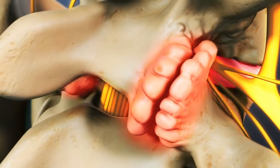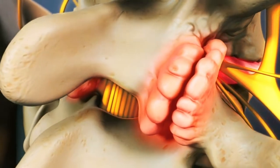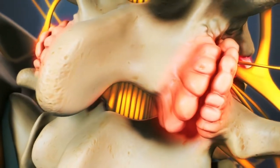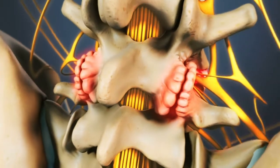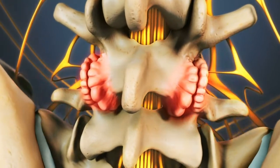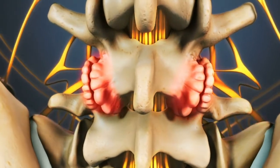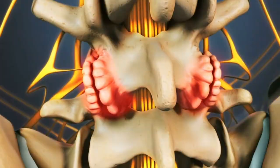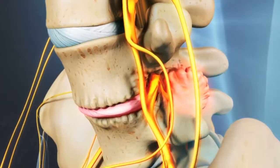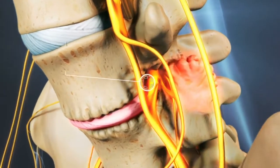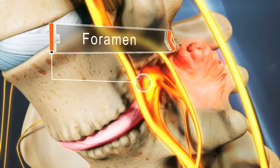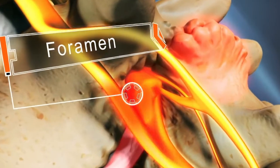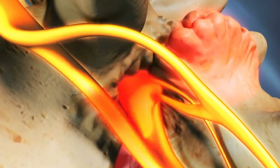Bone spurs are actually smooth growths that do not always cause pain, but in severe cases, they can compress nerves in the lower back and cause neurological symptoms. Bone spurs are likely to cause pain when they form in the foramen, the small hole through which nerve roots exit the spine.